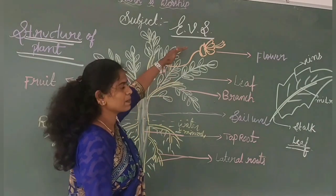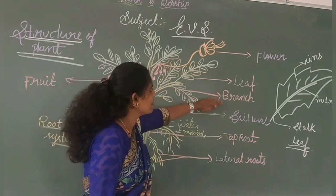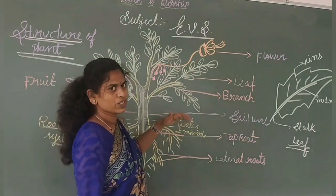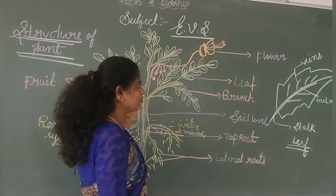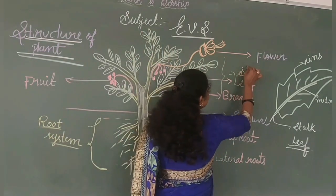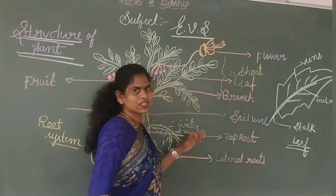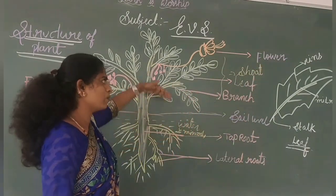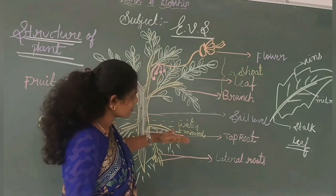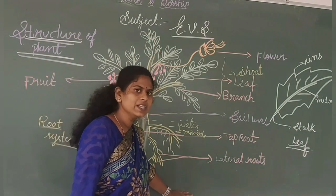What does the shoot system contain? The shoot system contains branches, leaves, and flowers. Together these form the shoot system. The shoot system is present above the soil, while the root system is present below the soil.